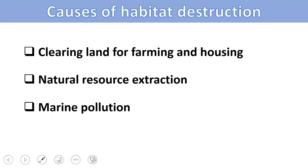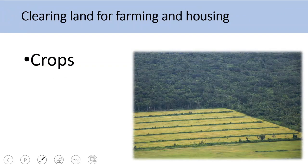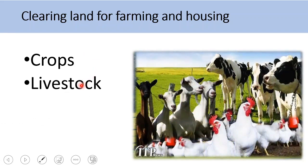Let's start with clearing land. We need to grow crops for our food, and this requires more space. Also, crops are grown as food for our livestock. We like to have meat, and having meat means you have to raise animals that produce meat. These animals need food, and producing food for them requires land.